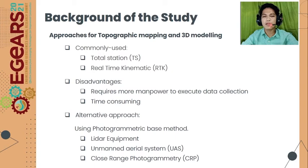Another disadvantage of using UAS-based methods for topographic mapping is that the terrain or ground below canopies cannot be captured. Another method is close-range photogrammetry, but using this approach for topographic applications requires an expensive calibrated camera or dosimetric camera for image acquisition.